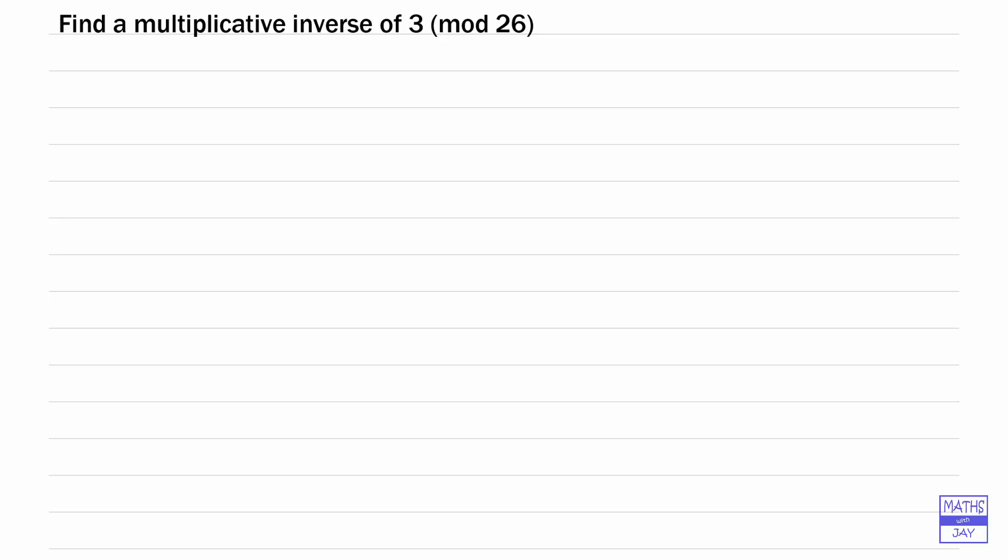That's the kind of thing we're trying to find here. We want to find an integer v such that when we multiply 3 by v, we get something that's congruent to 1, which means we get 1 plus or minus 26 times another whole number w. So 3v is congruent to 1 in mod 26.